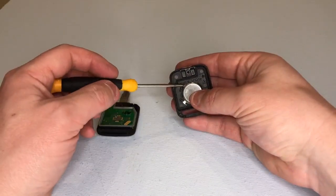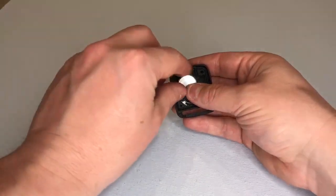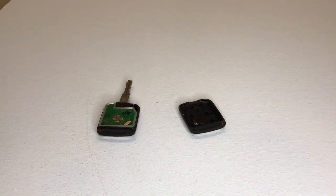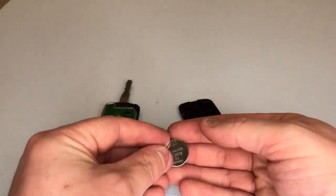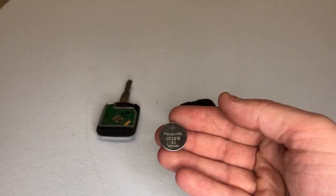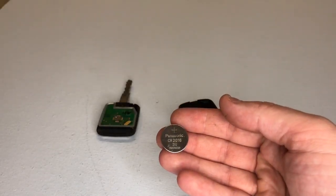Using your small screwdriver just pop it out of its housing like so. This key fob takes a battery with a part number of CR2016 like this one.